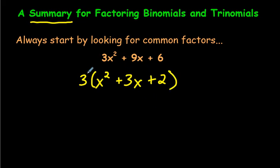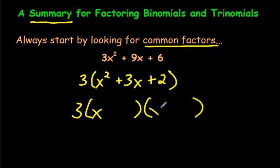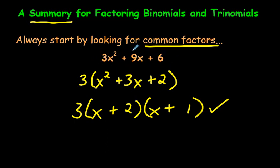What we've done here is called common factoring. At this point we have a trinomial, and from there we factor it quickly: what two numbers multiply to make 2 and add to make 3? Well, 2 and 1 — 2 times 1 makes 2, and they add to 3. So this is our answer in factored form. We've taken this trinomial from standard form and turned it into factored form.